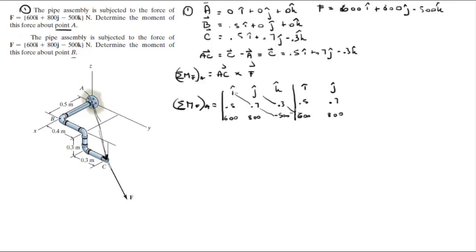So you do your positive diagonals, and this is equal to 0.7 times negative 500 times I is negative 350I, negative 0.3 times 600 times J is negative 180J, and 0.5 times 800 times K is positive 400K.